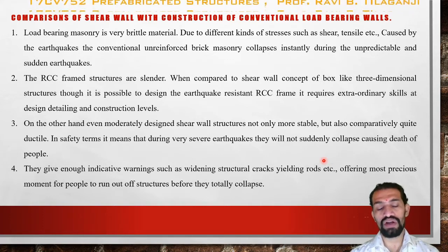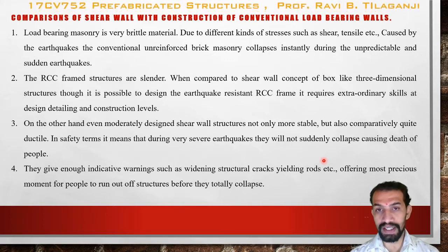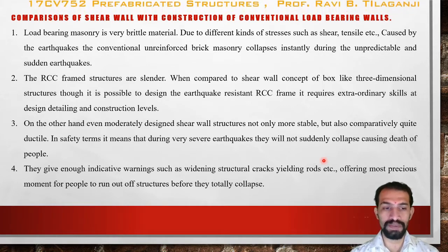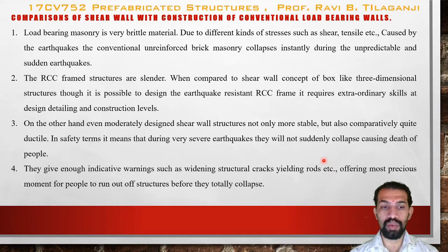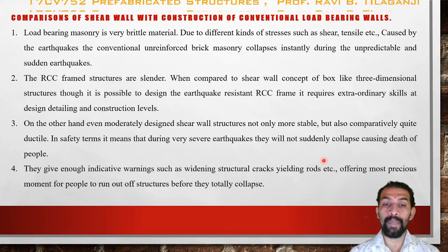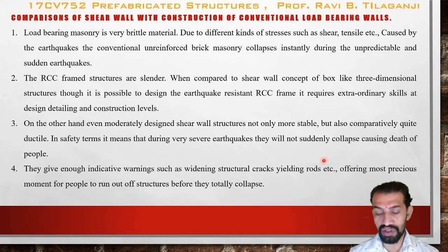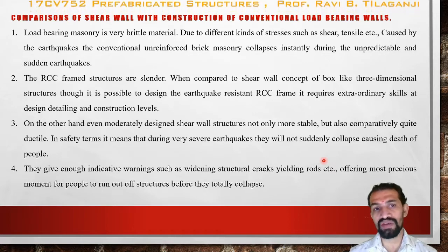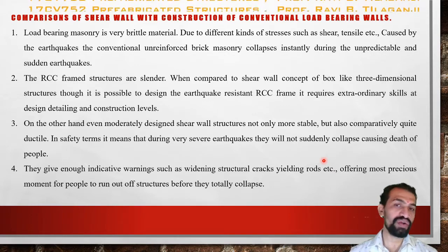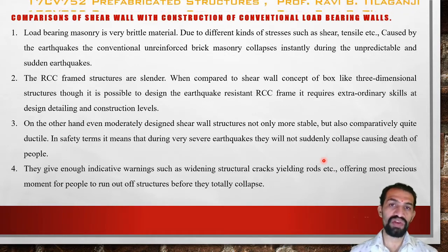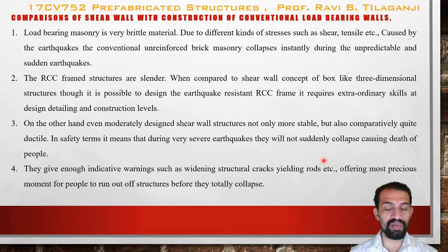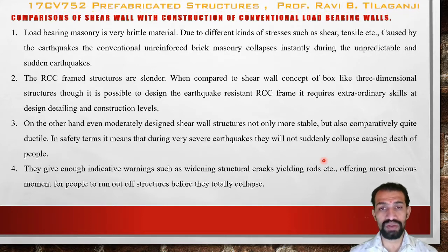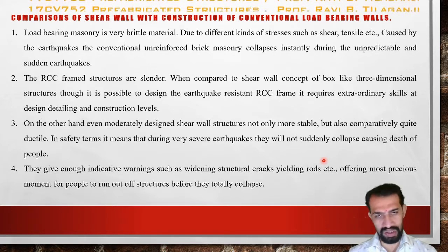Shear wall structures give enough indicative warnings — such as widening structural cracks and yielding reinforcing rods — offering a precious moment for people to evacuate before total collapse. In contrast, normal buildings collapse suddenly without warning because reinforcement is not provided and the structure cannot carry twisting or lateral loads effectively.